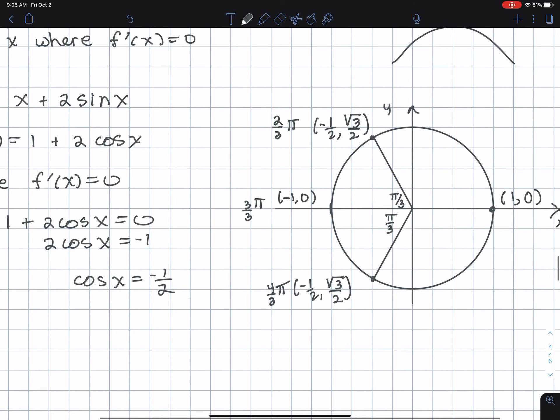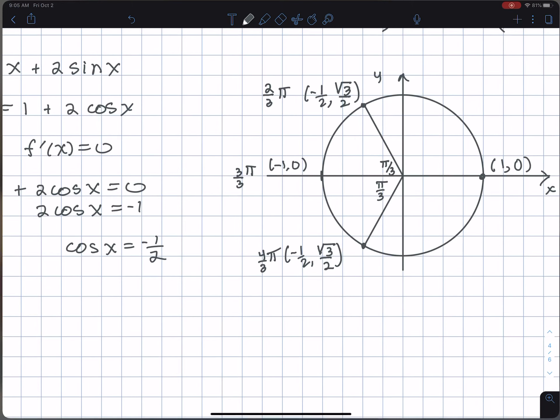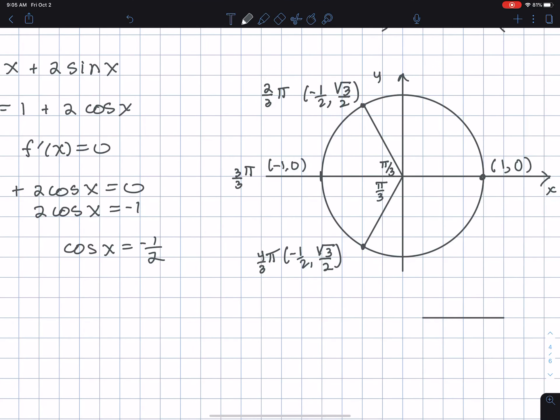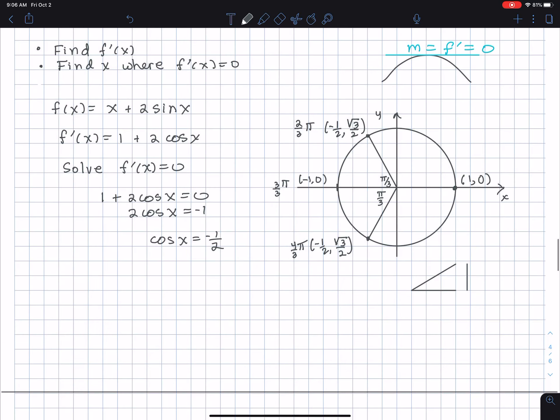Another approach, which is a good one, is to think of cosine as adjacent over hypotenuse. That leads to this right triangle. I'm estimating this 60-degree angle.